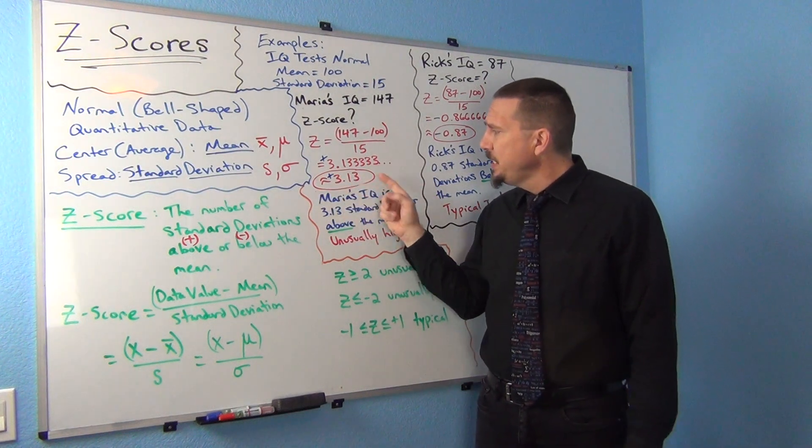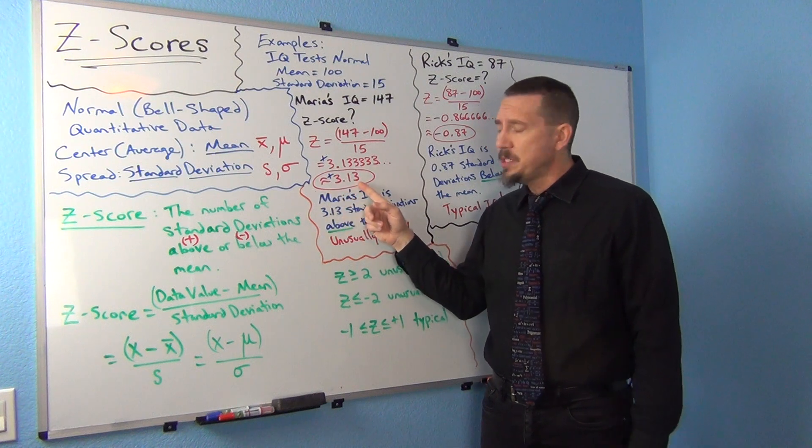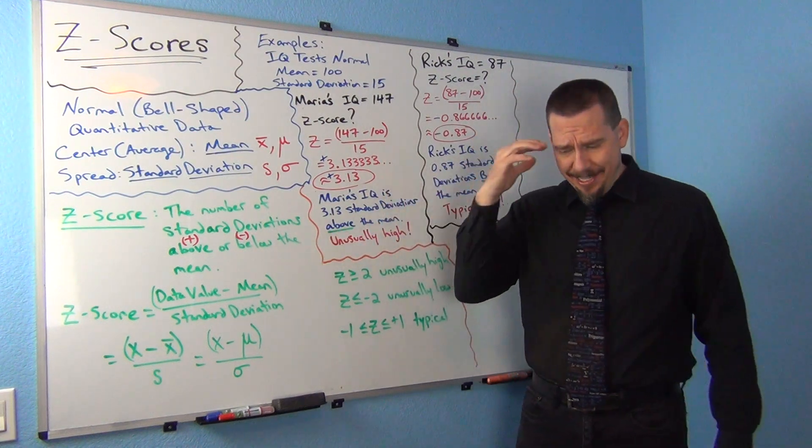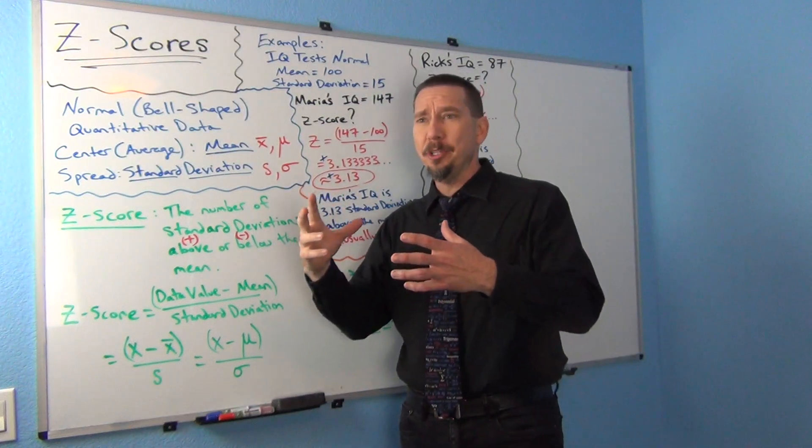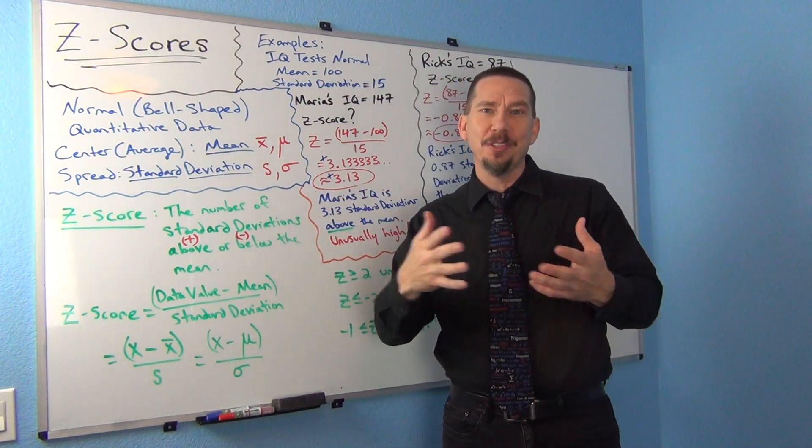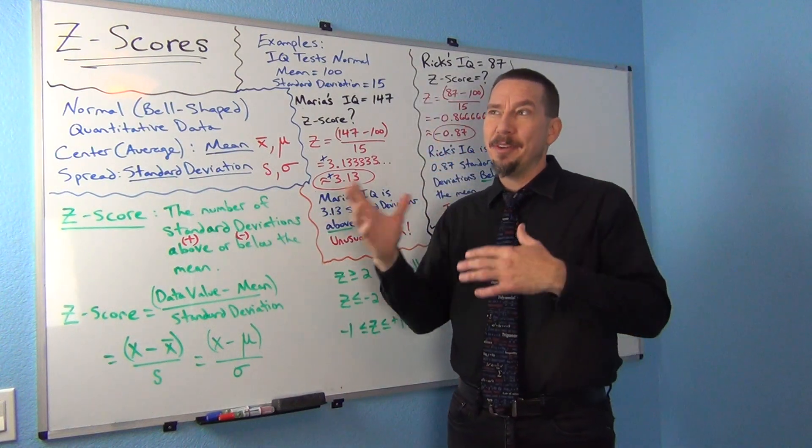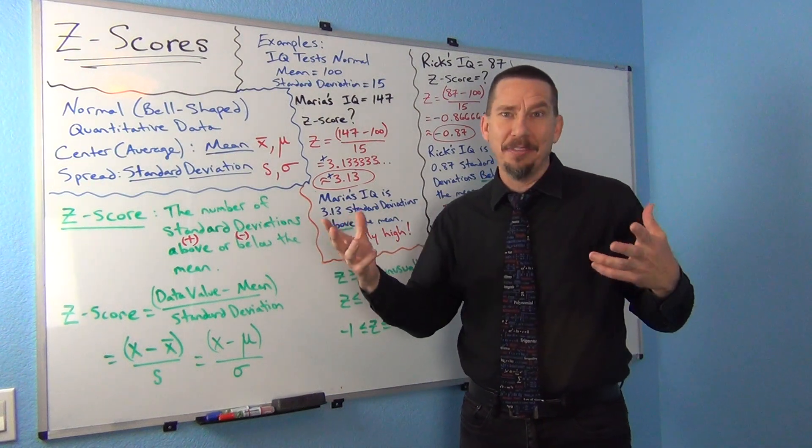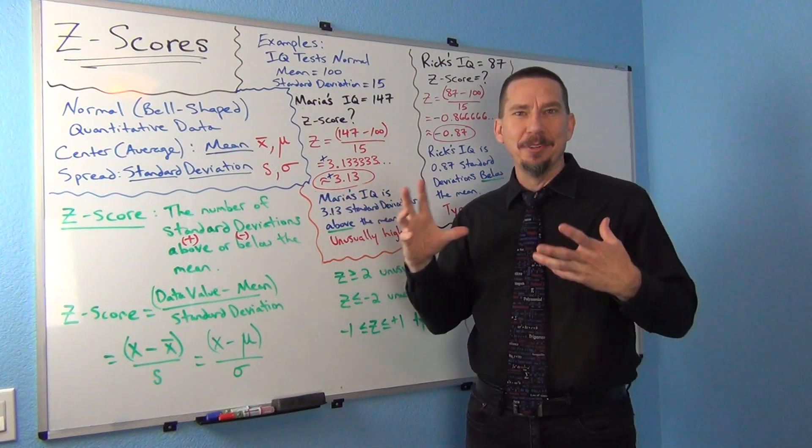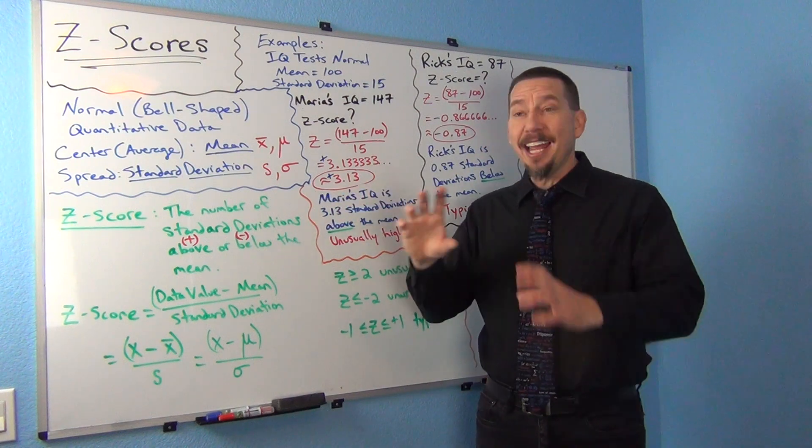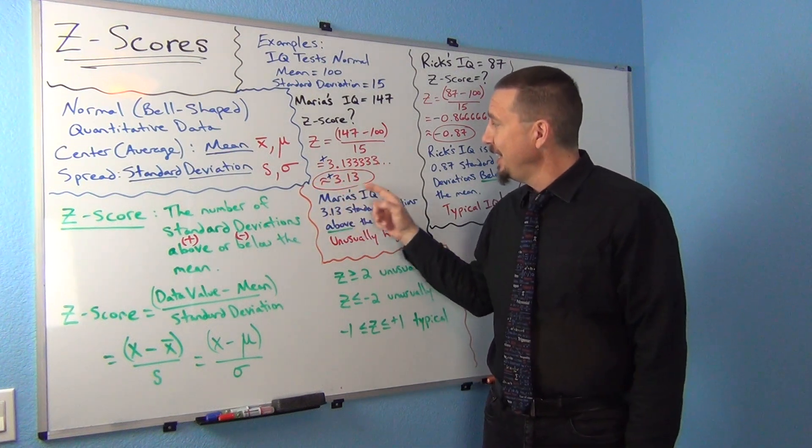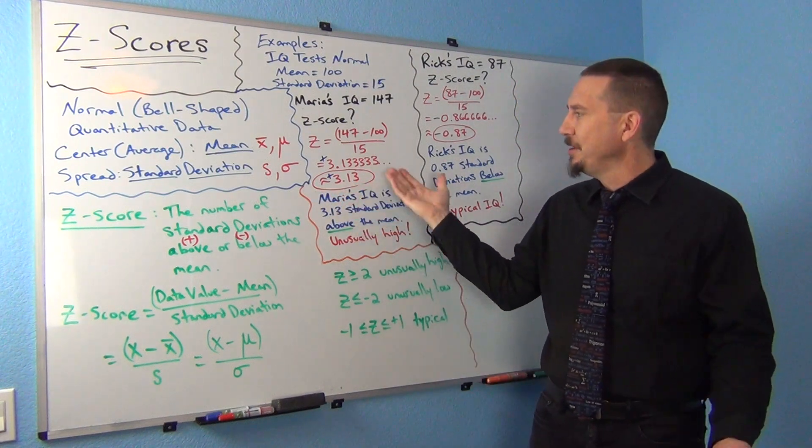If you'll notice, I did round it to the hundredths place, the second number to the right of the decimal, not for really any good reason. In the old days before computers, we used to have these charts that you would look up things in that were organized by Z-score, and the charts were always rounded to the hundredths place. If you're like me and you've been doing stats for a while, you may have looked up stuff on those charts, and those charts were always rounded to the hundredths place. So that's why I rounded it to the hundredths place.